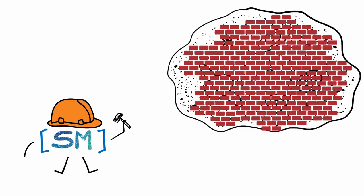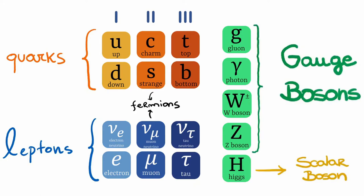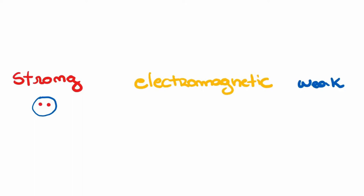Those elementary blocks are three generations of quarks and leptons, also known as fermions, and the mediators of their interactions, the bosons. As the name implies, the electroweak force is a unified description of the electromagnetic and weak forces. Together with the strong force, they constitute three of the four fundamental forces of nature.